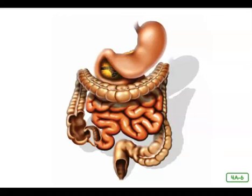Which organ system includes your stomach? Yes, it's the digestive system. Your stomach works closely with other organs, each made up of different types of tissues and cells, to perform different jobs. Sometimes organs are a combination of different types of tissue. The stomach is one of those organs — it is made up of many layers, including all four main types of tissue, which play a very important role in the digestion of your food.